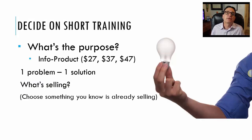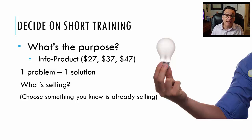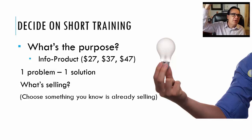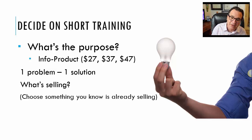Let's start with the very first step: decide on a short training. What's the purpose of the training? How much are you going to sell it for — $27, $37? Remember the one problem, one solution formula. As you're thinking about this, look at what is already selling in your marketplace. Don't cherry-pick some idea for an information product out of thin air without doing any market research. You've got to figure out what people are already buying and give them more of that.